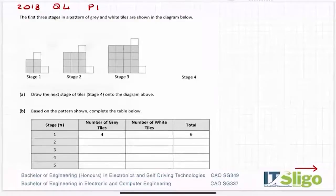2018 question, Leaving Cert Ordinary Level was question 4 on paper 1 and it was as follows. The first three stages in a pattern of grey and white tiles are shown in the diagram below: Stage 1, Stage 2, Stage 3. Part A then asks you to draw the next stage of tiles onto the diagram above.